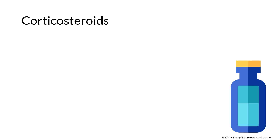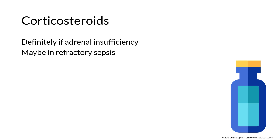Adrenal insufficiency can lead to distributive shock, and the treatment is hydrocortisone 200 to 300 mg daily, in either divided doses or by continuous infusion. The literature goes back and forth in septic shock — we know steroids at this dosing aren't harmful, but they don't reliably improve survival. My practice is to give patients in septic shock with escalating vasopressor requirements hydrocortisone.